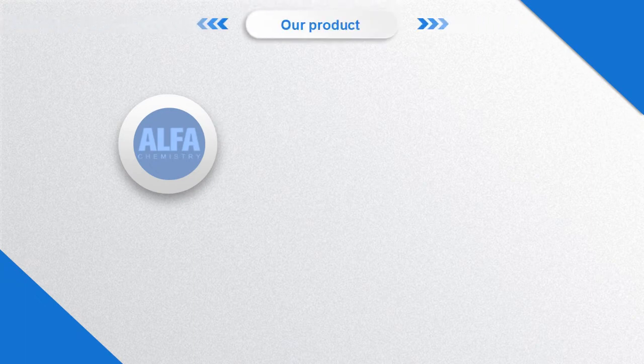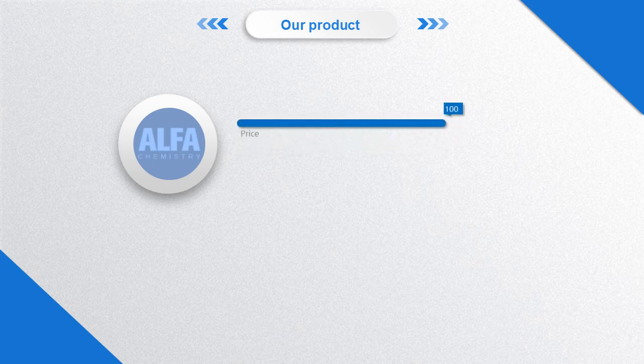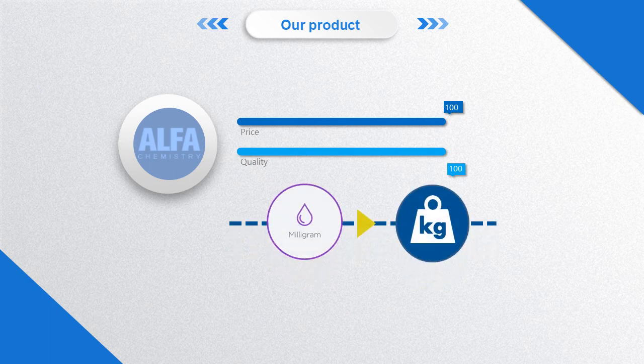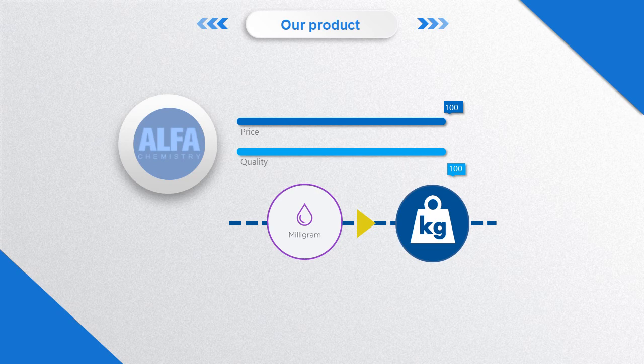Alpha chemistry has created a tangible competitive advantage for customers, with high quality as well as optimal prices. Most of our products can be supplied ranging from milligrams to kilograms scale, and delivered with technology documents.